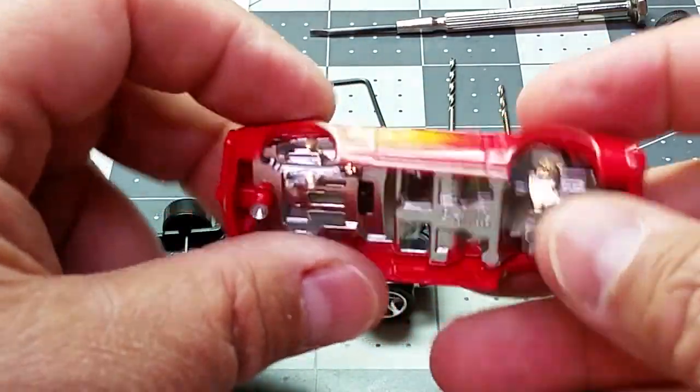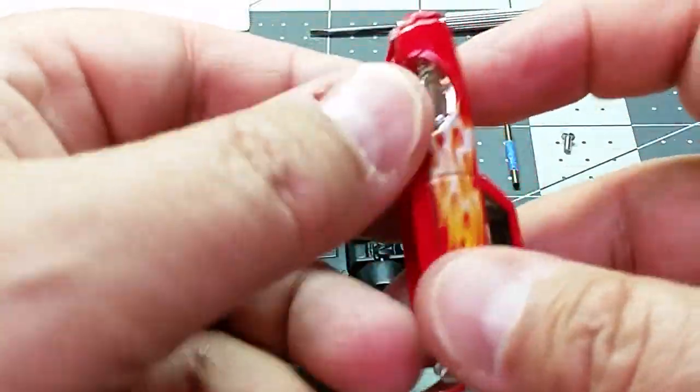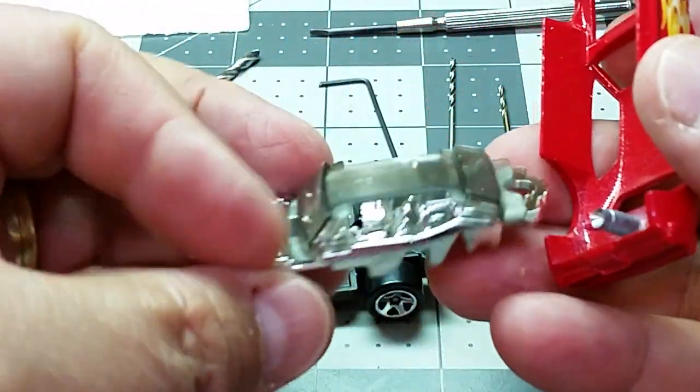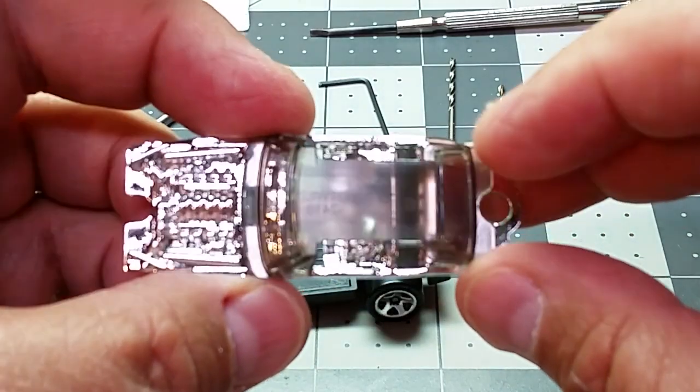The next thing is to remove the interior and the windshield. This car with the exposed engine, it's rather easy, just push down on the engine and it pops right out.